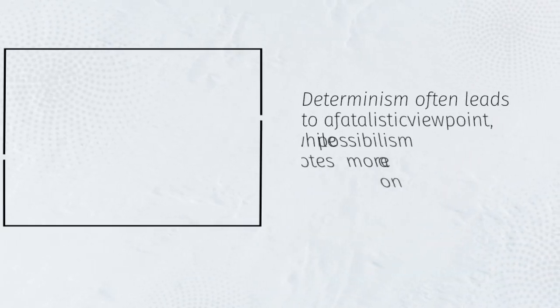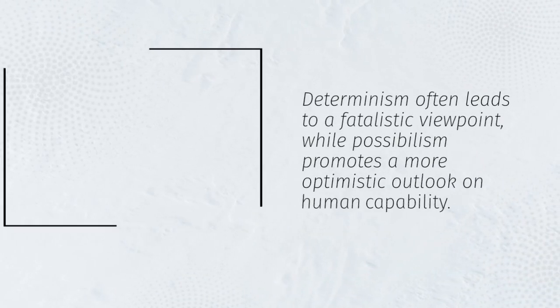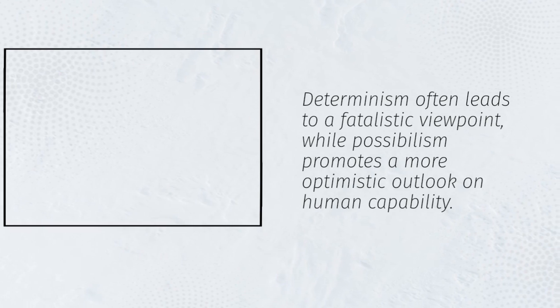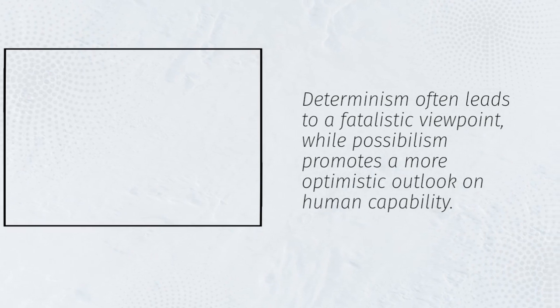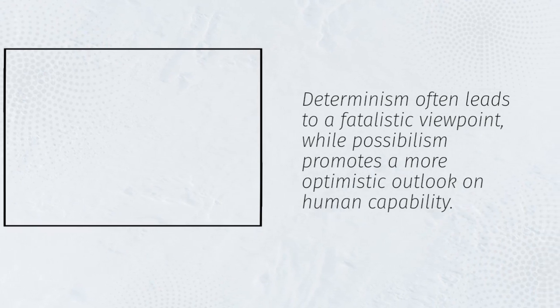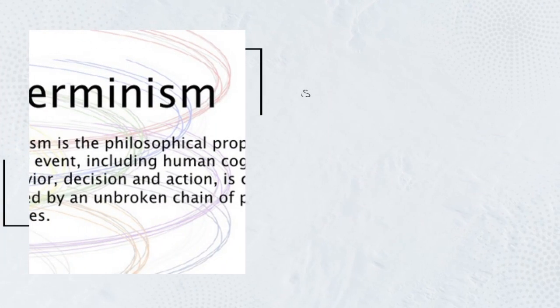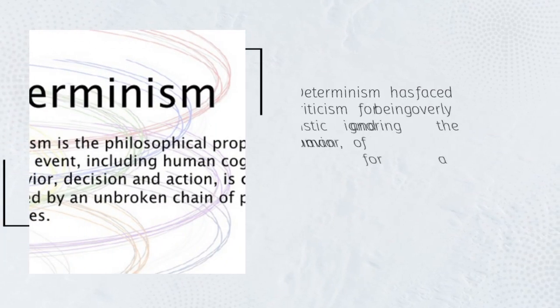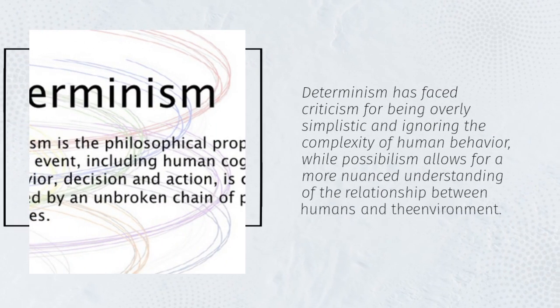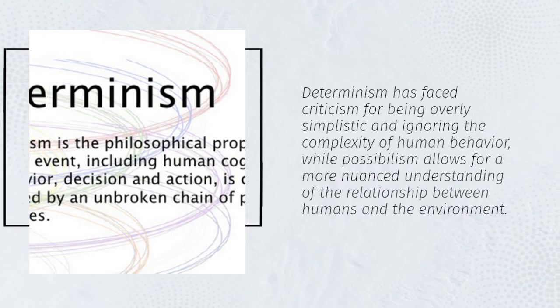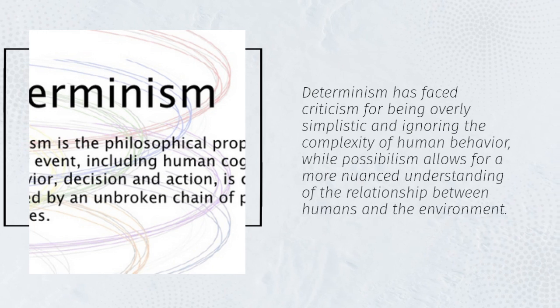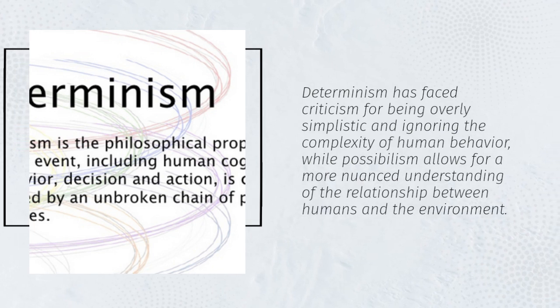Determinism often leads to a fatalistic viewpoint, while possibilism promotes a more optimistic outlook on human capability. Determinism has also faced criticism for being overly simplistic and ignoring the complexity of human behavior, while possibilism allows for a more nuanced understanding of the relationship between humans and the environment.